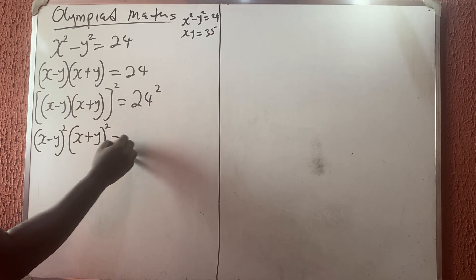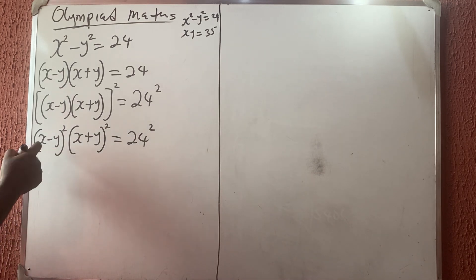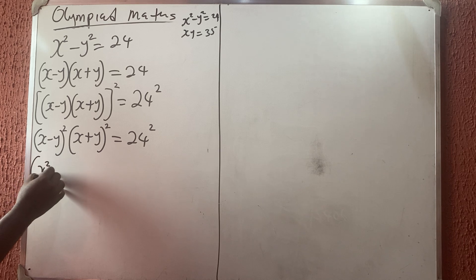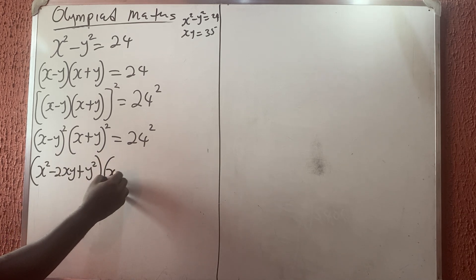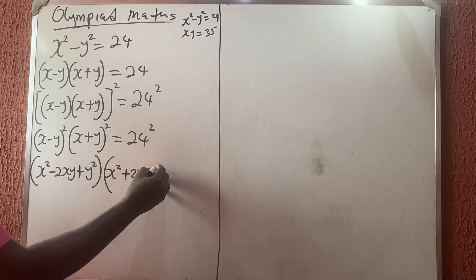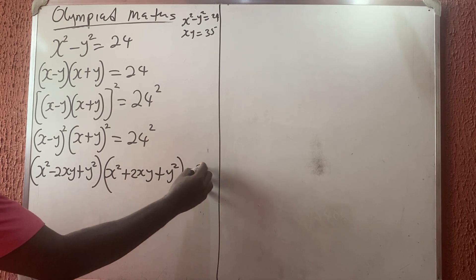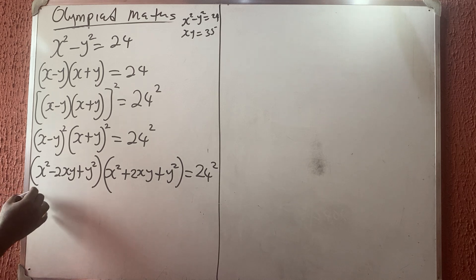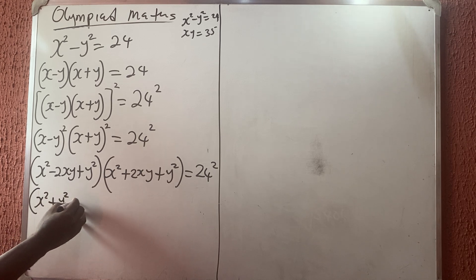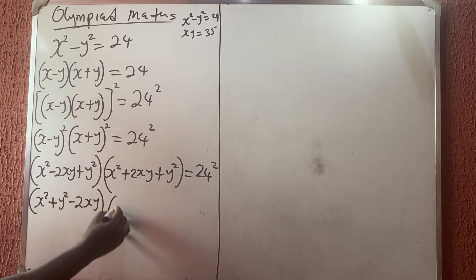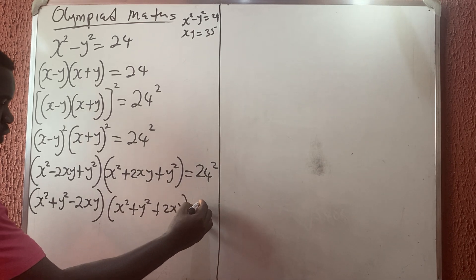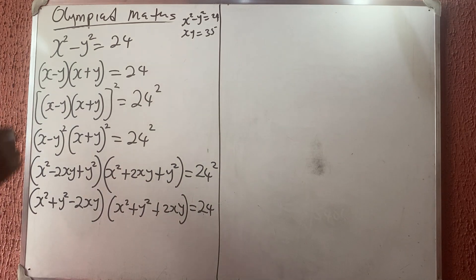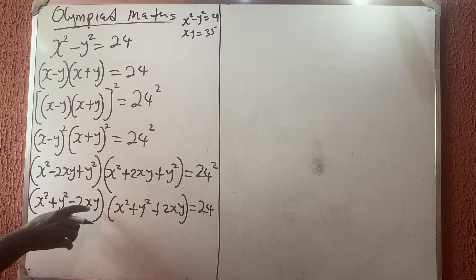Squaring gives (x minus y) squared times (x plus y) squared equals 24 squared. Expanding: (x squared minus 2xy plus y squared)(x squared plus 2xy plus y squared) equals 24 squared. We already know xy equals 35, so we substitute.